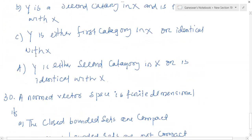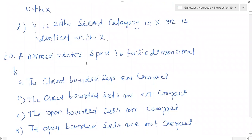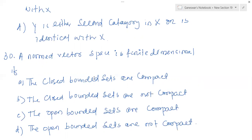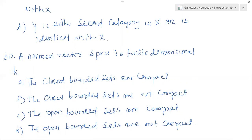And question number 30: a normed vector space is finite dimensional if the closed bounded sets are compact — that is true. The closed bounded sets are not compact, the open sets are compact, and the open bounded sets are not compact are the other options. The correct answer is: a normed vector space is finite dimensional if the closed bounded sets are compact. I have completed all questions up to number 30. Thank you all. I discussed these for the Staff Selection Board of Orissa or SSB, just from examples of certain questions of functional analysis. Thank you.